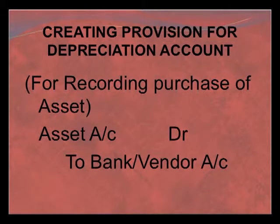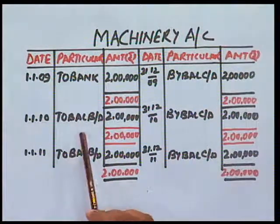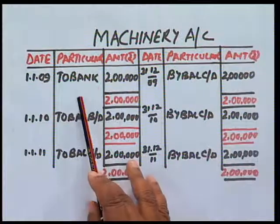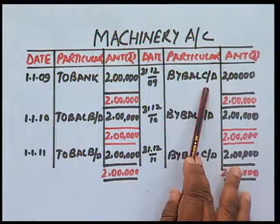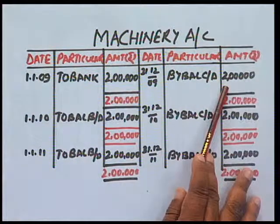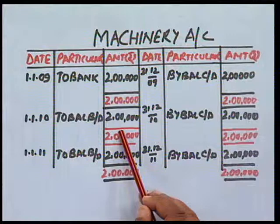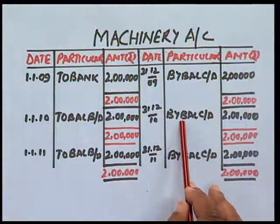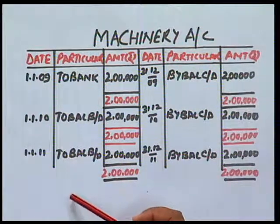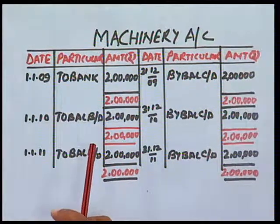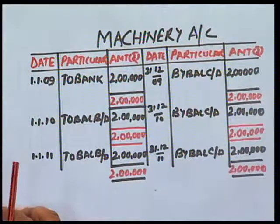Under the second method, when we do not transfer the depreciation to the asset account directly, we prepare a separate account — the provision for depreciation account. In the machinery account, we record the purchase of machinery for rupees 2 lakh on 1st January, but we do not charge depreciation to the machinery account. The machinery account shows an opening balance of 2 lakh each year, and the cost of the asset remains the same. Depreciation is recorded in the separate provision for depreciation account.